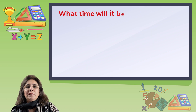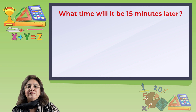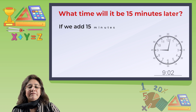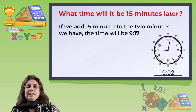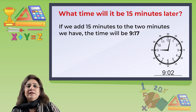What time will it be 15 minutes later than the given time in the picture? That is 9:02. If you add 15 minutes to the 55 minutes we have, the time will be 8:17 p.m.